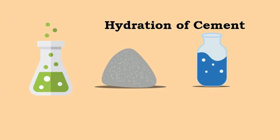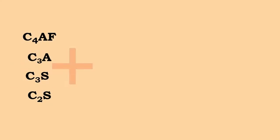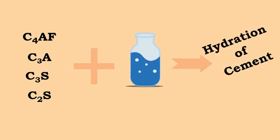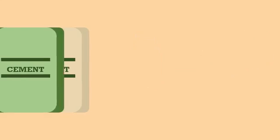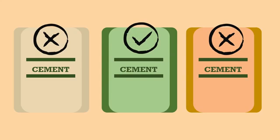Cement particles contain C4AF, C3A, C3S, and C2S compounds. When these chemical compounds react with water, the hydration of cement occurs. This is an important physical property of cement to be considered while deciding the type of cement for the work.